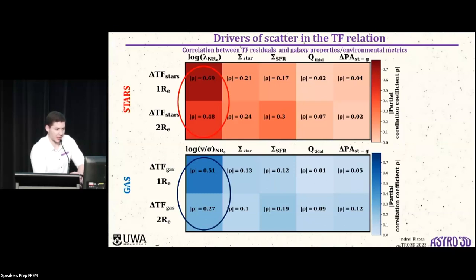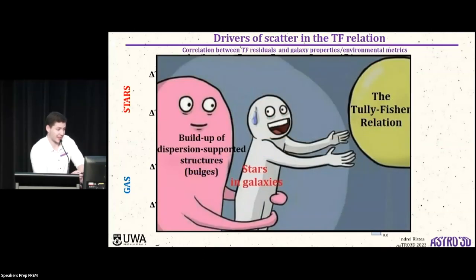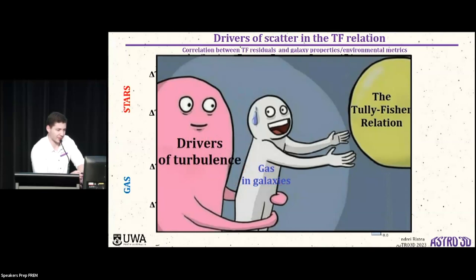So we now know which galaxy properties correlate with the scatter. We can formulate a hypothesis on what physical processes cause the galaxies to move away from the Tully-Fisher. For the stars, this is probably the buildup of dispersion supported structures or bulges, right? Stars being collisionless can form themselves in these structures. Whereas for the gas, it's the drivers of turbulence. And interestingly, for the parameters that we probe, we can't really tell which driver of turbulence is the dominant one.